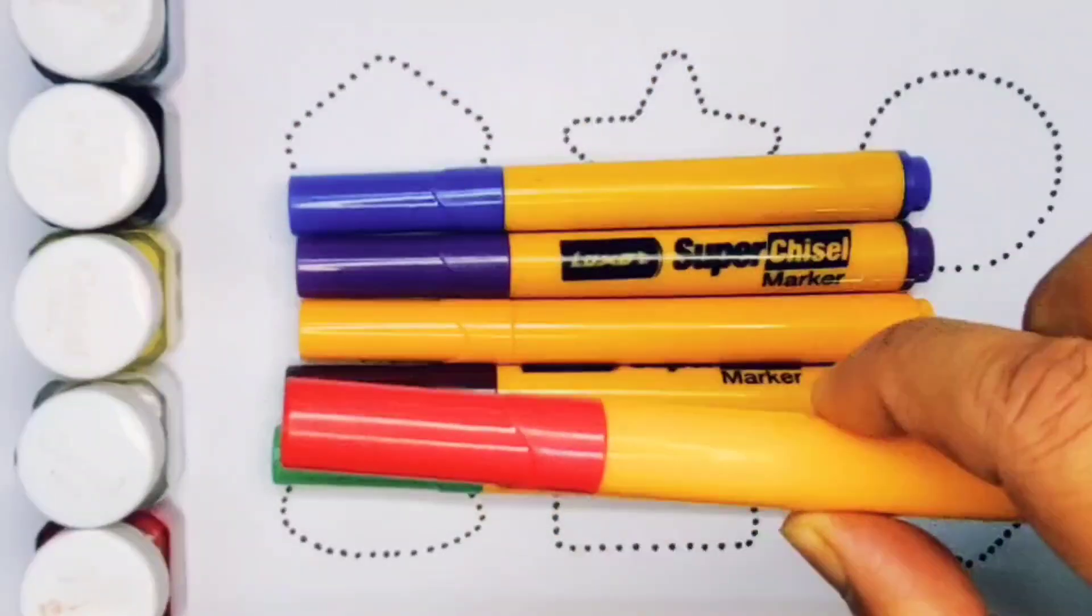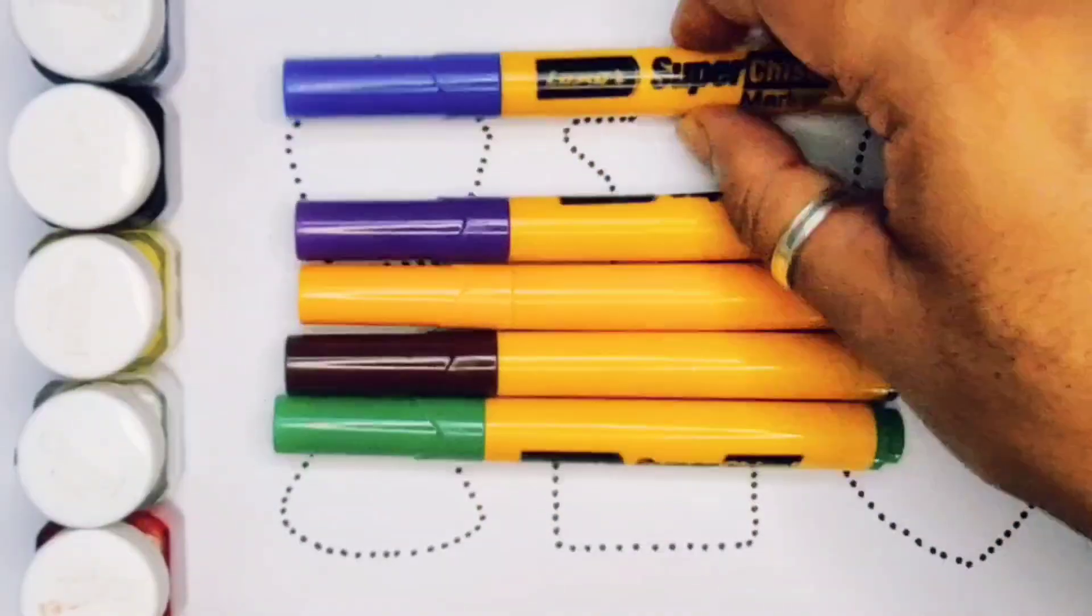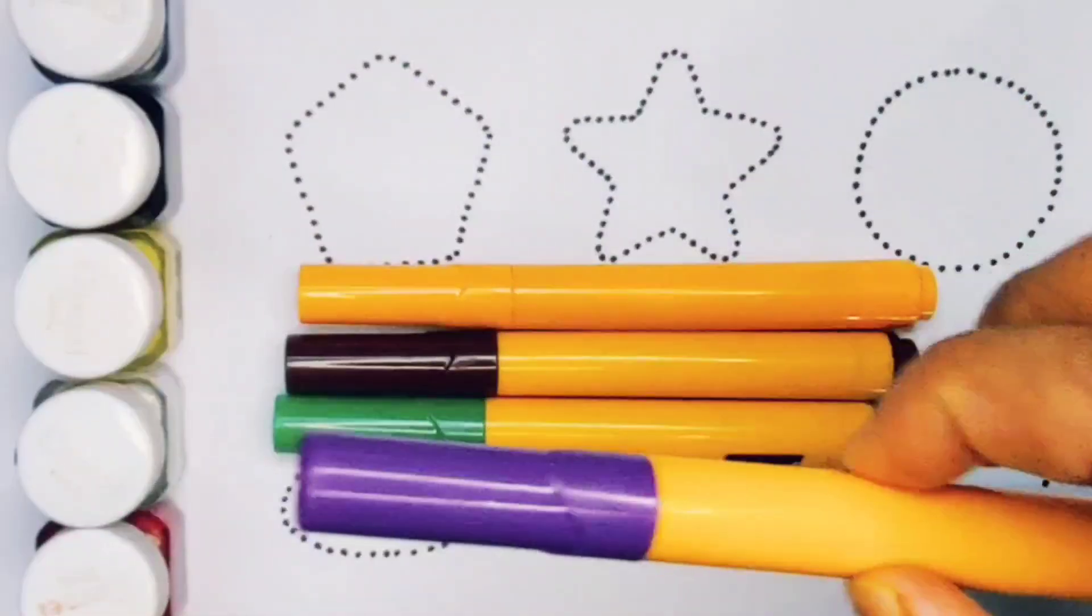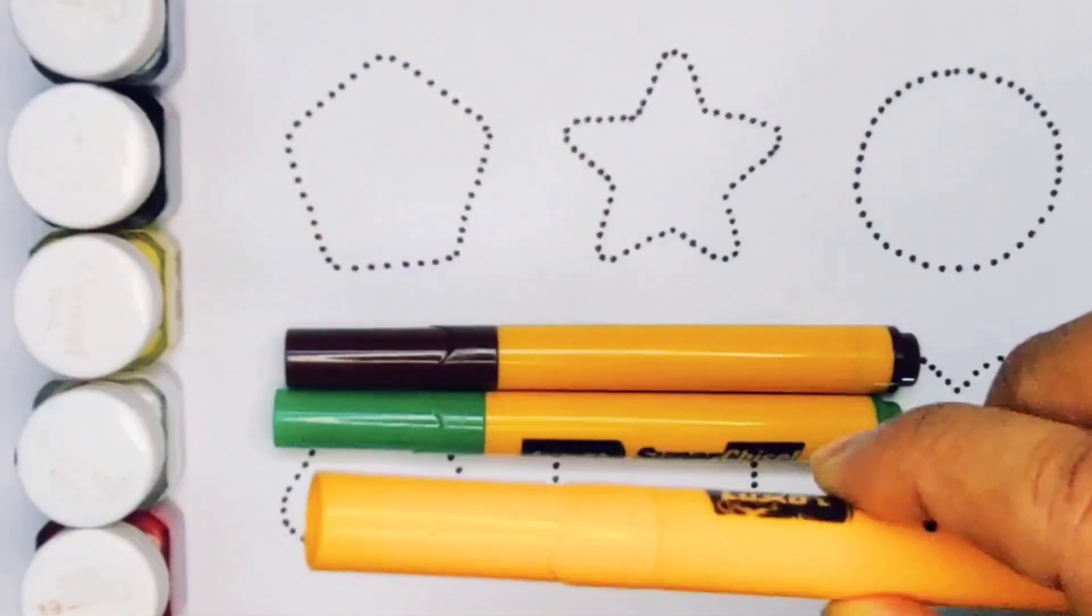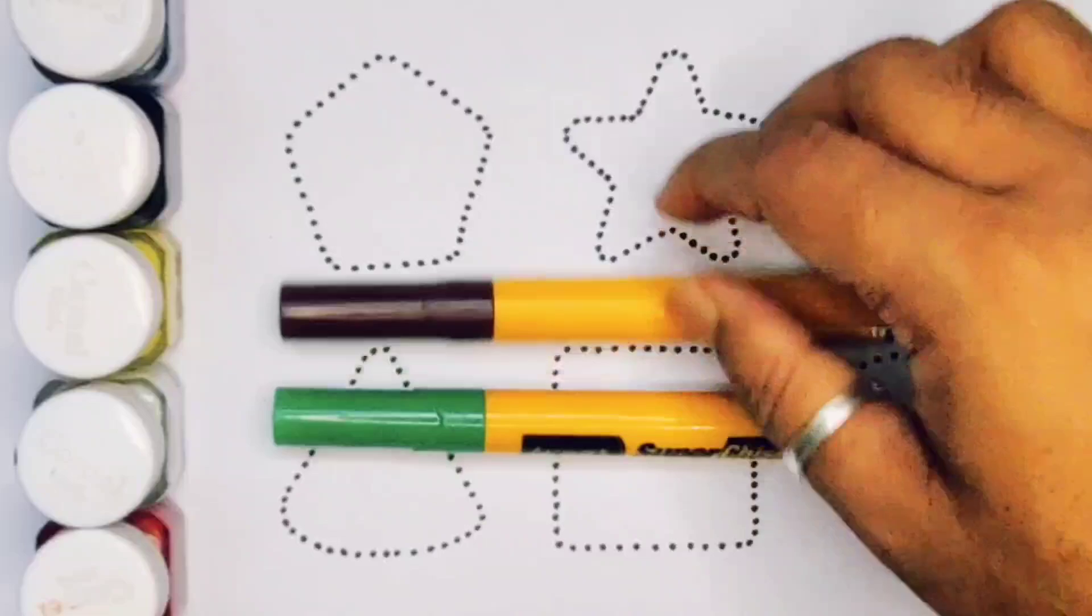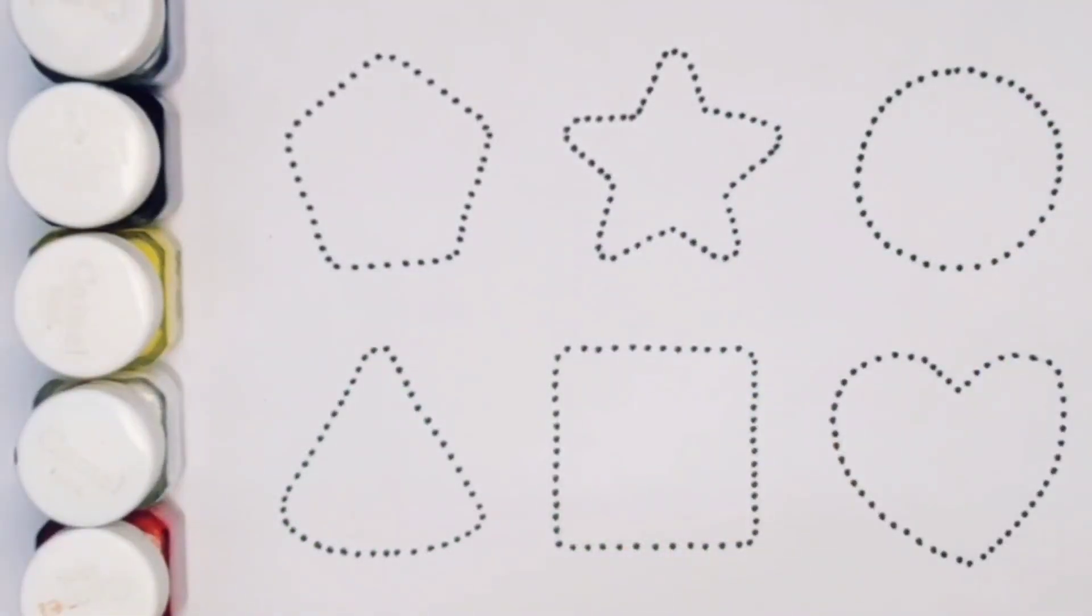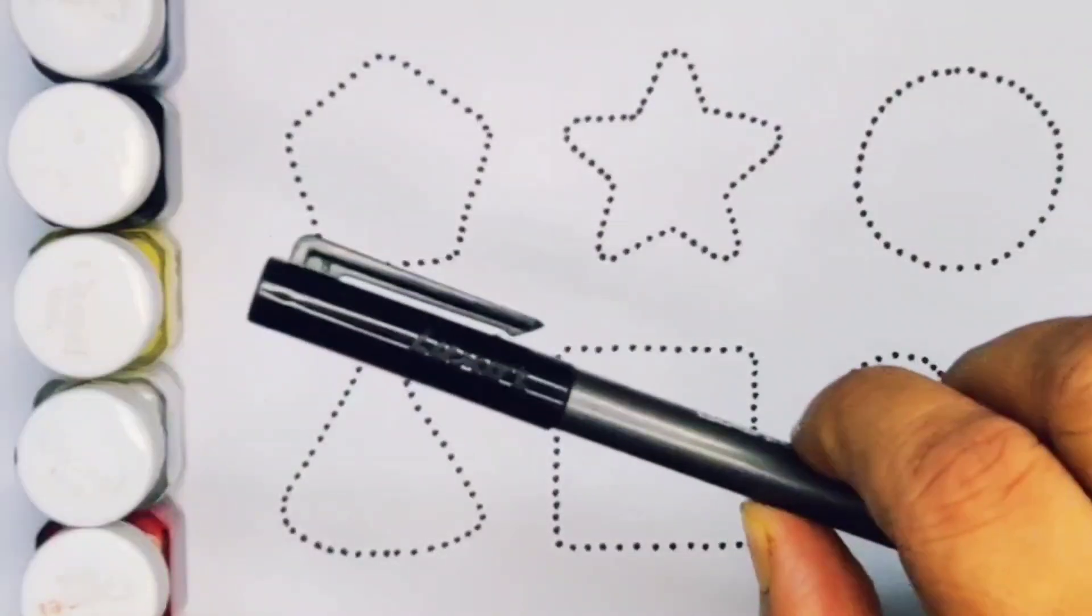Red color. Blue color. Purple color. Orange color. Chocolate color. Green color. And black color.